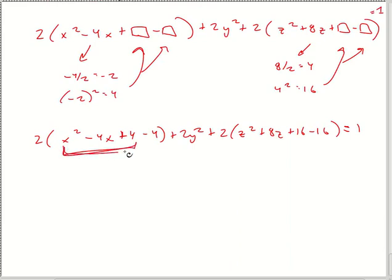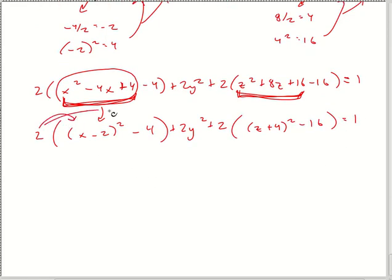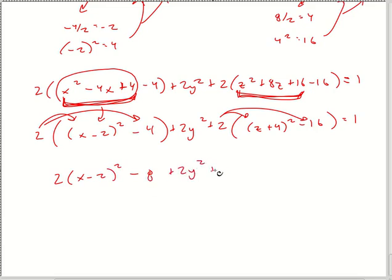Rewriting: 2(x minus 2) squared — note the parentheses. The 16 is still on the inside, so when I distribute the 2 I get 2(x minus 2) squared minus 8, and 2(z plus 4) squared minus 32. The important step is that 2 times 4 is 8 and 2 times 16 is 32 — I mess that up all the time, so I'm stressing it. Move all constants to the right side: adding 32 and 8 plus the 1 gives 41.